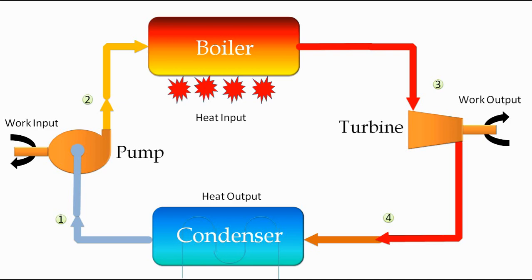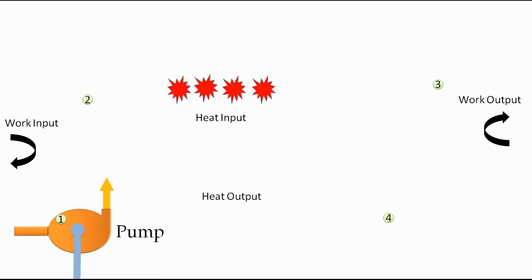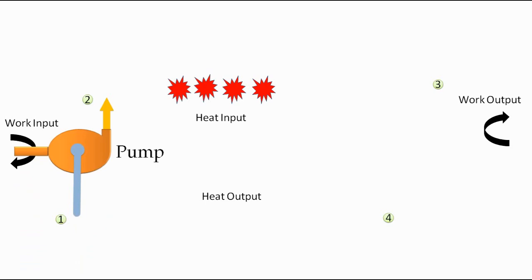So there are basically four main components of Rankine cycle. Now we will go one by one and see how each component works and how mechanical work is generated when these components work together following Rankine cycle. So first thing is pump. For pump, work input is given which is used to compress the water coming from condenser and it is used to raise its pressure.